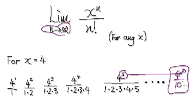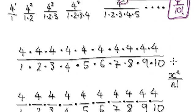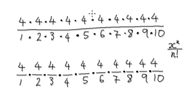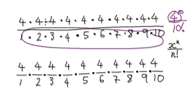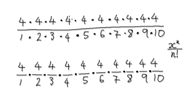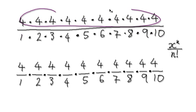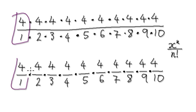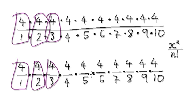So let's just look at this one fraction here. That one fraction is 4 to the power of 10. We are looking at the 10th term, so that would be this. 10 factorial is this; 4 to the power of 10 would be 4 times 4, 10 times — so that would be the numerator. You can imagine this as being one fraction, and then this here is another fraction, this here is another fraction, and so on.